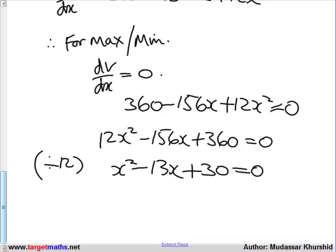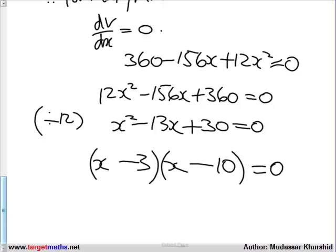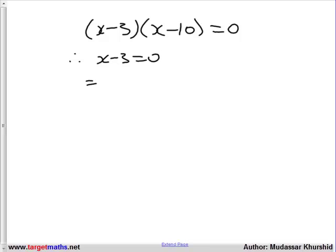This looks like a much nicer quadratic to solve. We now proceed in solving this quadratic. Factorizing this quadratic gives us x minus 3 times x minus 10 equals 0. Therefore, x minus 3 equals 0, which means x is equal to 3. Or, x minus 10 equals 0, which means x is equal to 10.